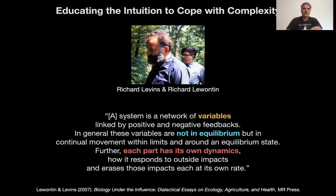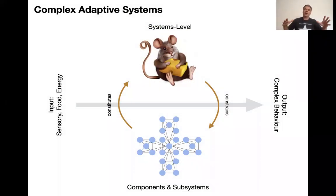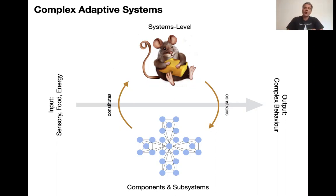Further, each part has its own dynamics — here is Simon's near decomposability again, or modularity of systems. How it responds to outside impacts — so there's a sensory sort of function. Systems perceive input from outside and erase those impacts each at its own rate. They imply that the behavior of the system depends on its history, and each module of the system has a different sort of memory of that history. This is a bridge into the classic definition of a complex adaptive system that goes back to work at the Santa Fe Institute by John Holland and Murray Gell-Mann and others.